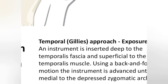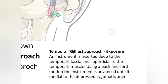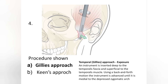The important discussion: the instrument is inserted deep to the temporal fascia but superficial to the temporalis muscle. This is an important MCQ point — the instrument is inserted just below the temporal fascia but superficial to the temporalis muscle, and it is used to elevate the depressed zygomatic arch.